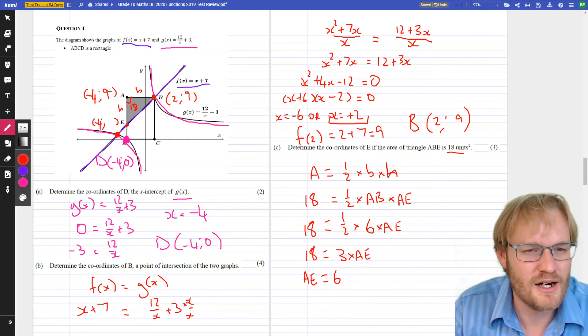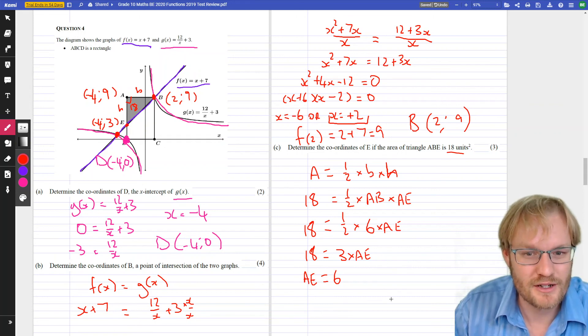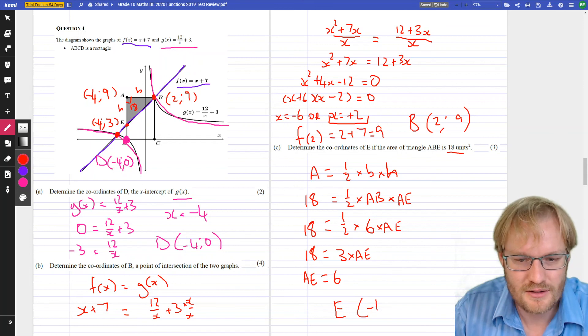If that Y value is 9, and that distance is 6, there it is, minus 4, 3. So, we're going to go, E is negative 4, 3. Quite nice.